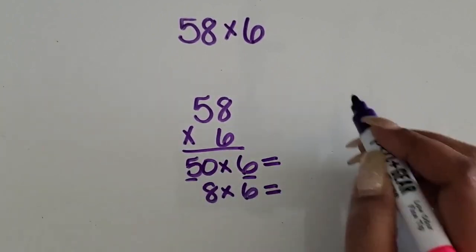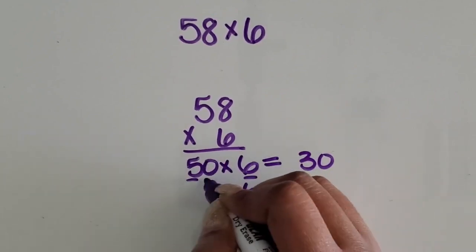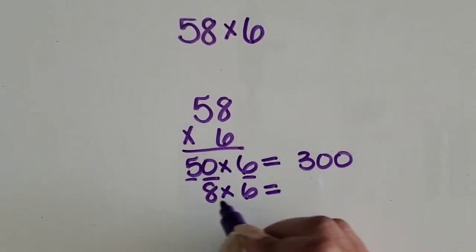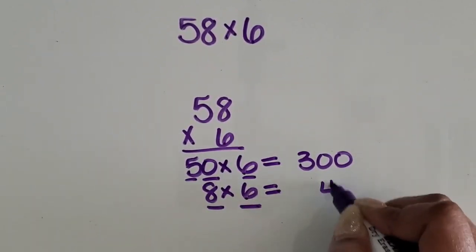50 times six. Five times six is 30. Ten times greater is 300. Eight times six is 48.